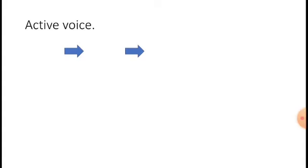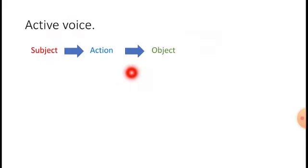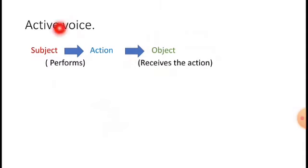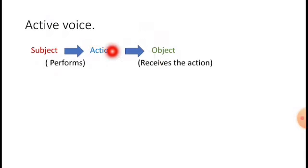Active voice means the subject performs the action, and the object receives the action. The person who does the action is known as the subject. The person who receives the action is known as the object. Action means verb. So in active voice, the subject performs the action and the object receives the action. Let me show you an example.